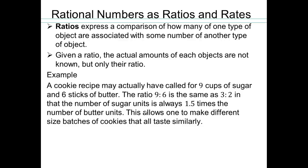For example, if you're cooking, and the cookie recipe says have 9 cups of sugar and 6 sticks of butter, the ratio is 9 to 6. And you write the ratio with a little colon like this. So 9 to 6, that's what the ratio is. It's the same as 3 to 2. Remember, 9 over 6, you can make an equivalent fraction by dividing both numerator and denominator by 3. So it's the same as 3 to 2, in that the number of sugar units is always 1 and 1 half times the butter units.